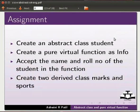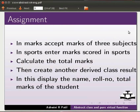As an assignment create an abstract class student. Create a pure virtual function as info. Accept the name and role number of the student in the function. Create two derived class marks and sports. In marks accept marks of three subjects. In sports enter marks scored in sports. Calculate the total marks. Then create another derived class as result. In this display the name, role number and total marks of the student.